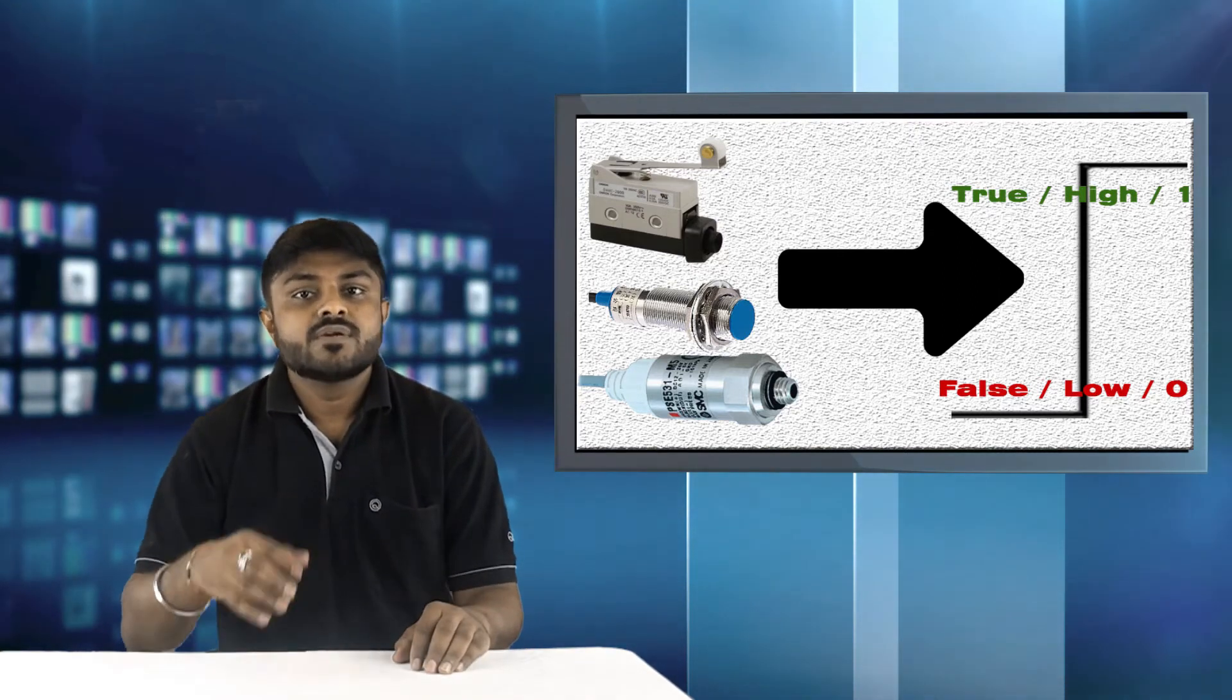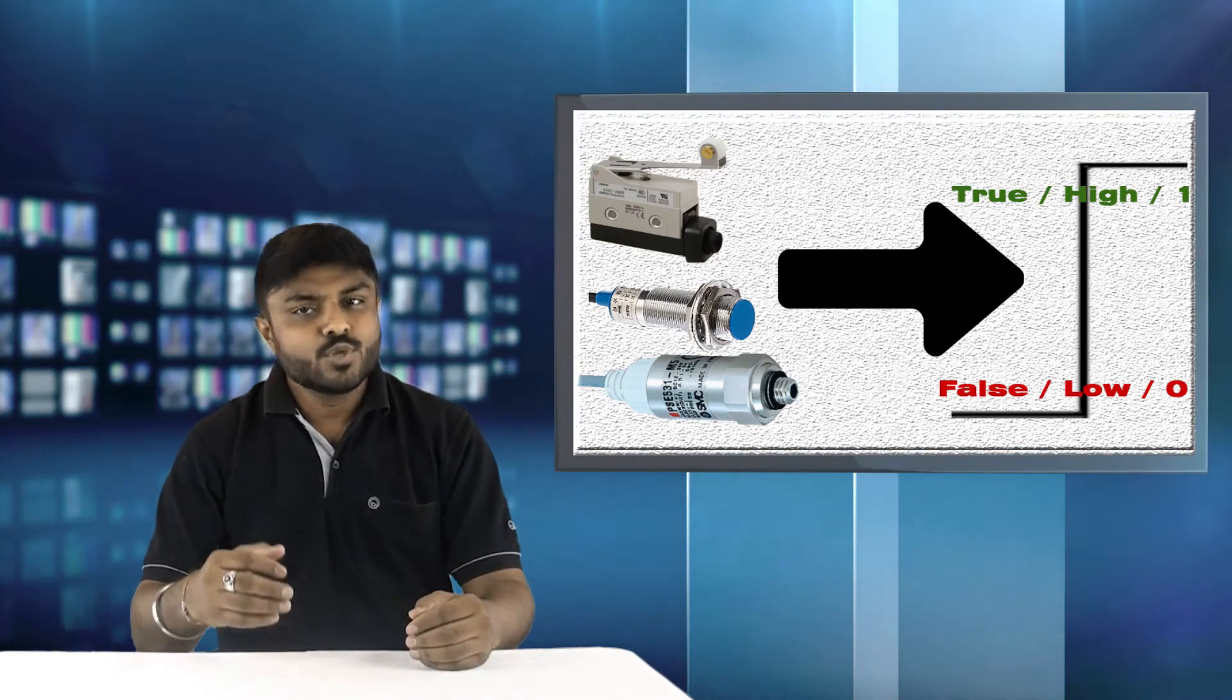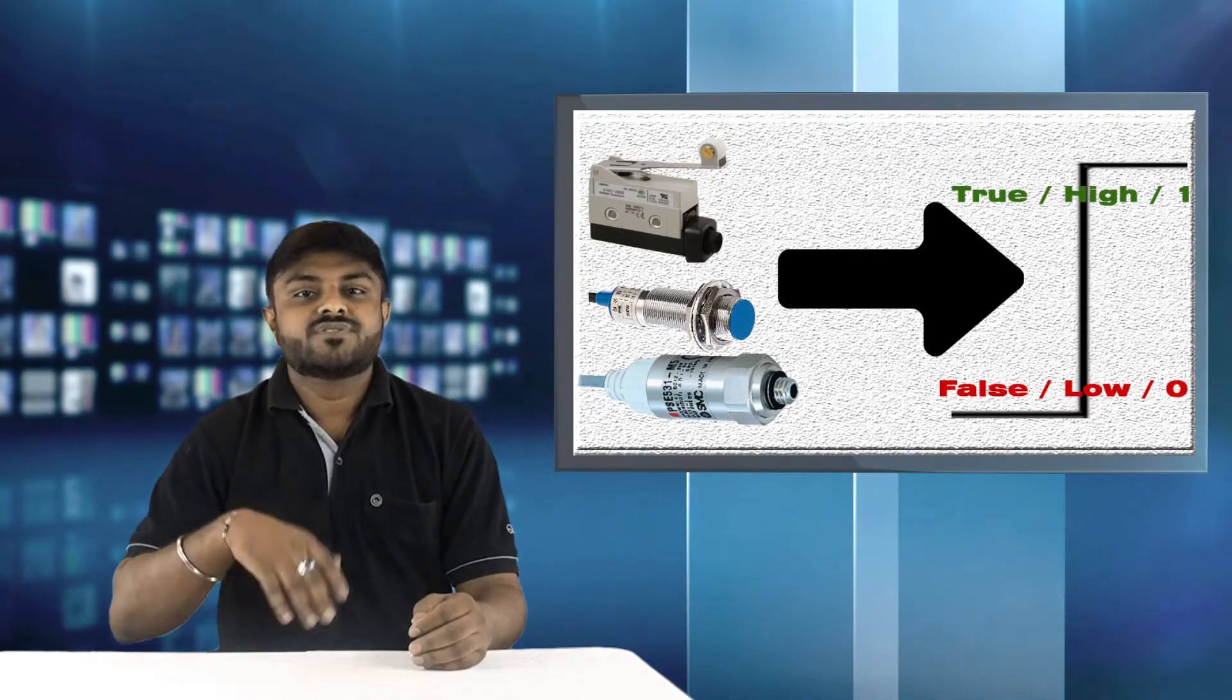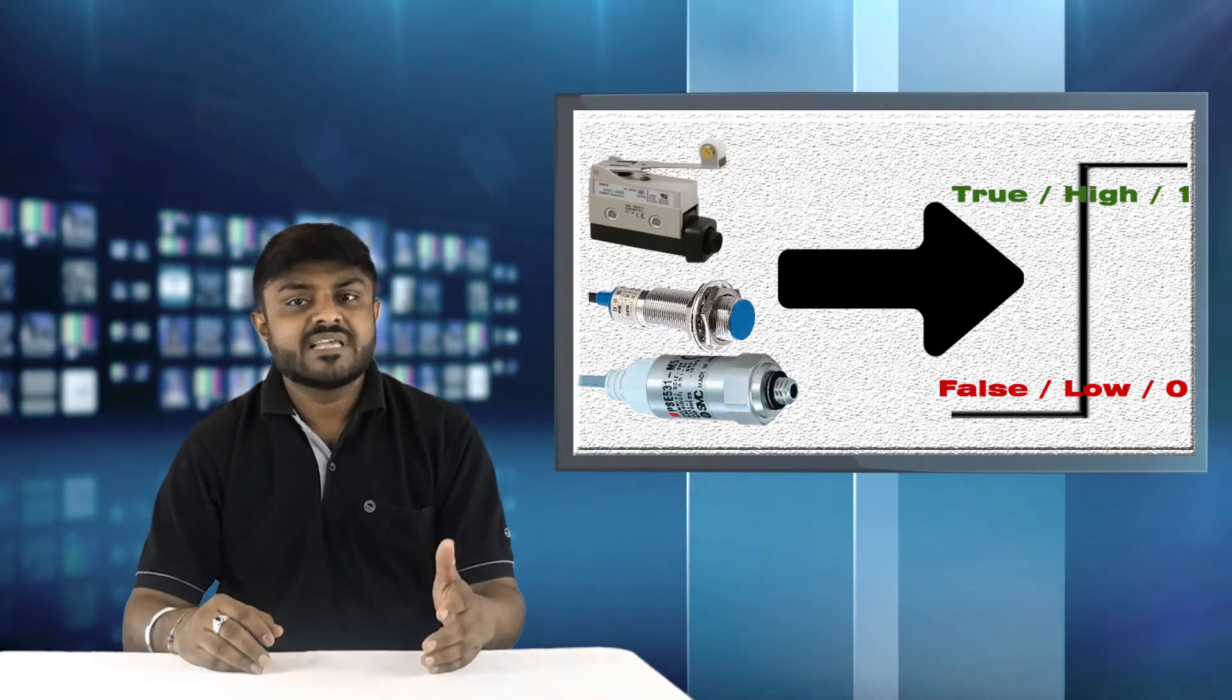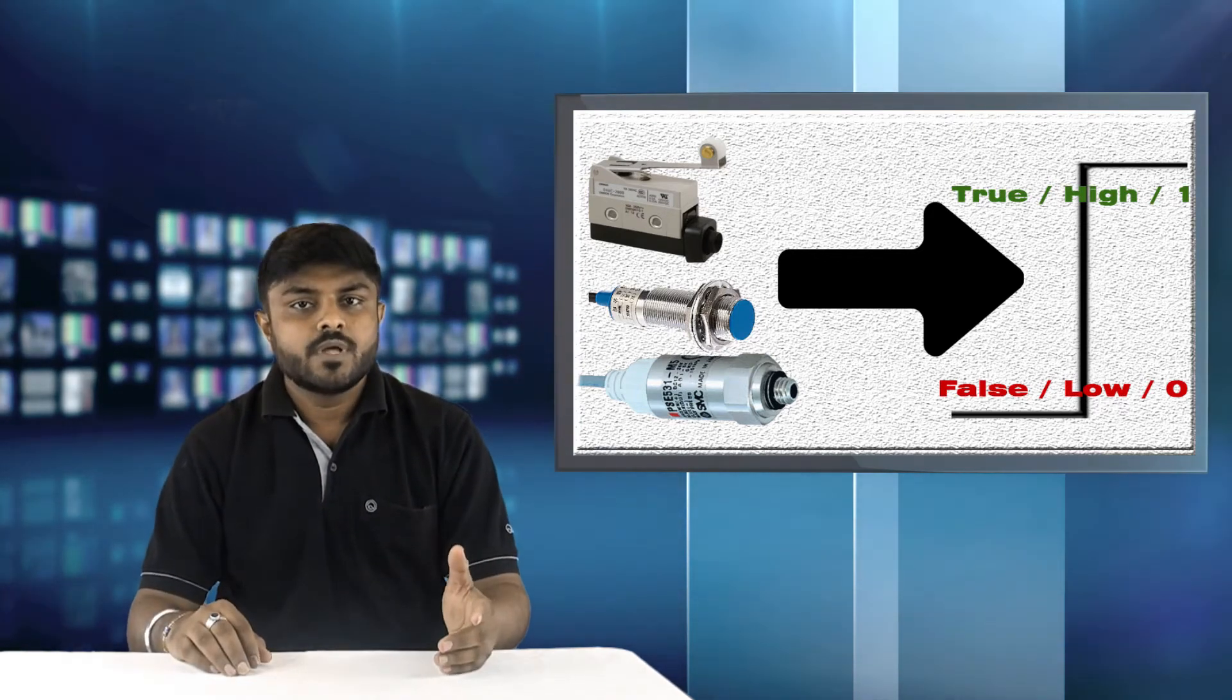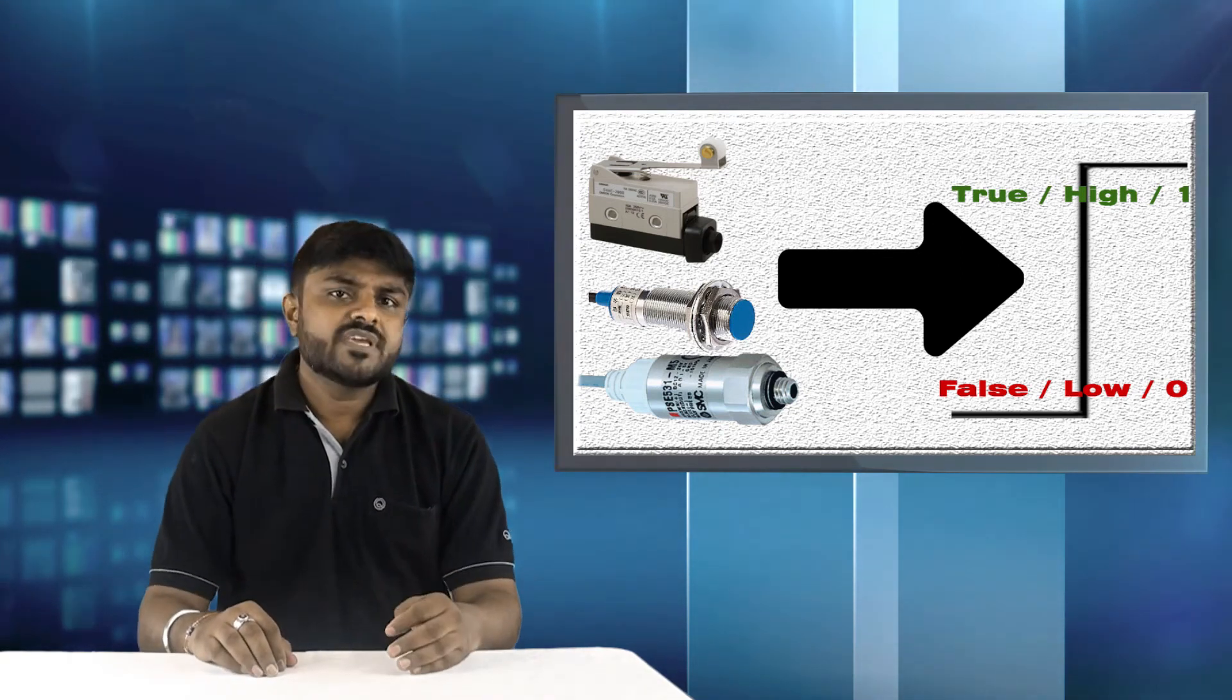It means the sensor output is high, true or we can say 1. While sensor is not sensed, 0V DC is observed between normally open contact of the sensor with respect to ground. It means the sensor output is low, false or we can say 0.